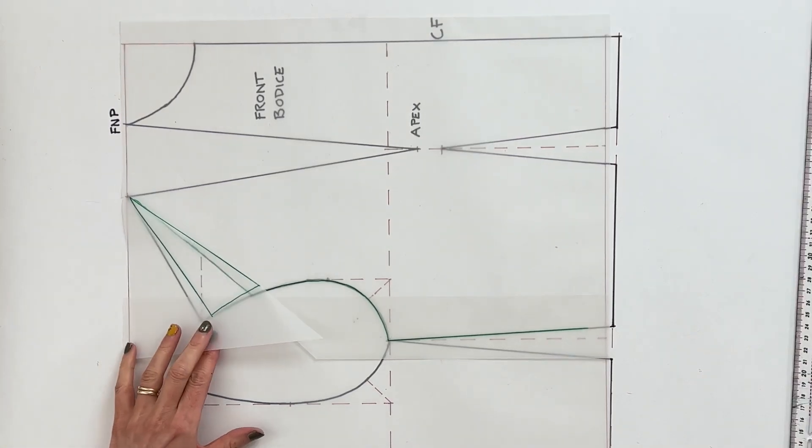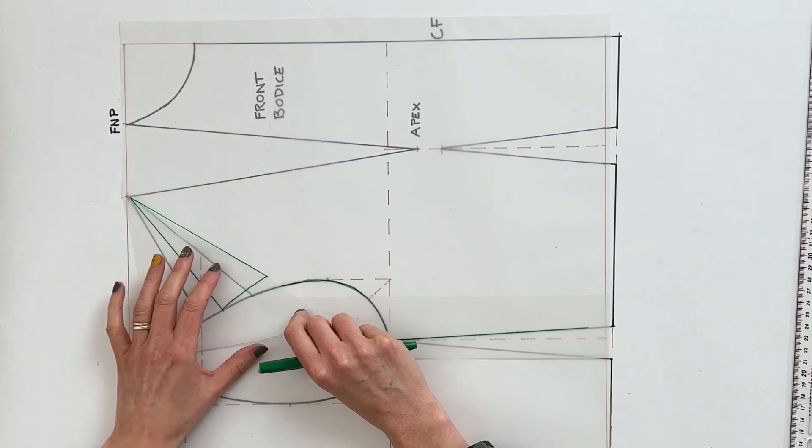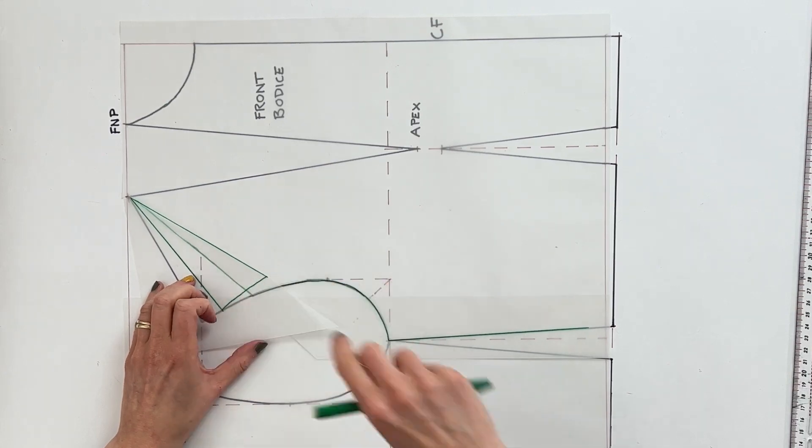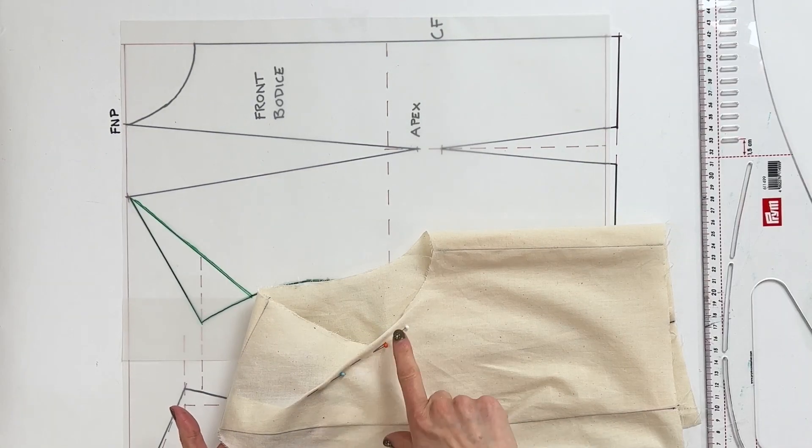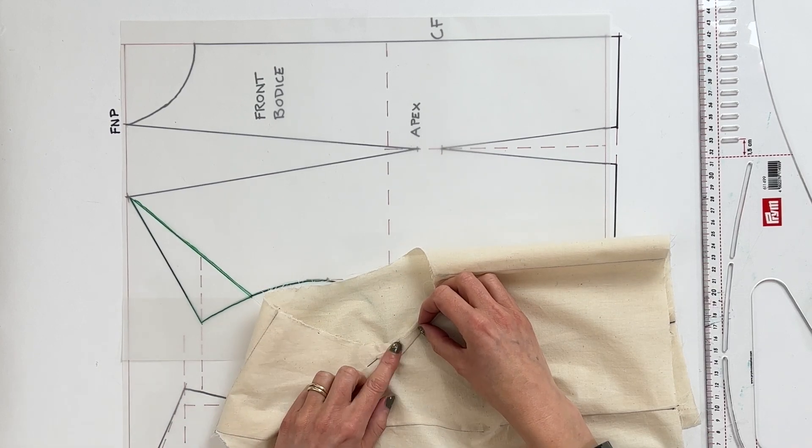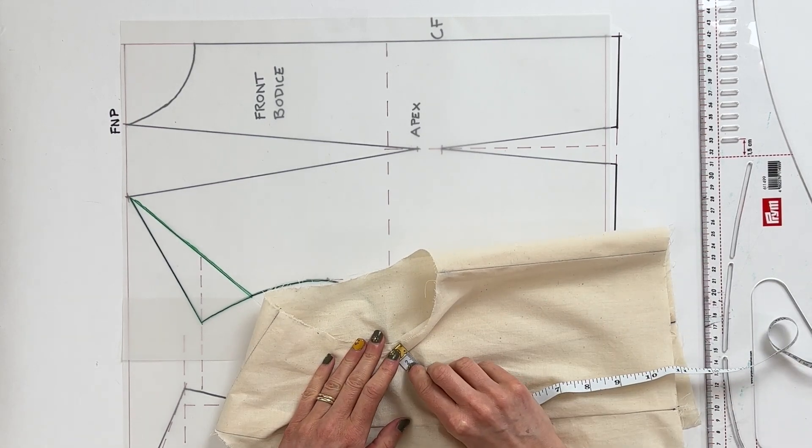Now at this point we're just going to close up and reduce the volume in this area here because we've got a sloping shoulder and we're trying to reduce the amount of volume that we've got in the toile at this point. Now as you can see on here I've pinned away the excess volume around the sleeve head so all I need to do is just check what the distance is here to find out how much I want to remove it by.